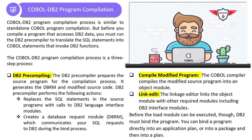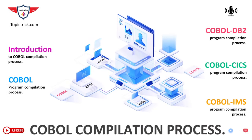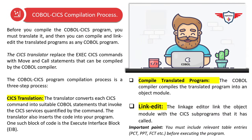Now let's move on to the COBOL CICS compilation process. When you write a CICS program, you request CICS services by issuing CICS commands, and each command should be included within EXEC CICS and END-EXEC. A COBOL compiler cannot process CICS commands directly, so an additional step called translation is required to convert your program into executable code. Before you compile the COBOL CICS program, you must translate it, and then you can compile and link edit the translated program as a normal COBOL program. The CICS translator replaces EXEC CICS commands with COBOL MOVE and CALL statements that can be compiled by the COBOL compiler.